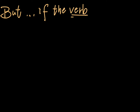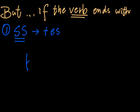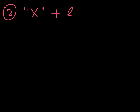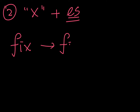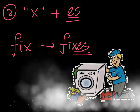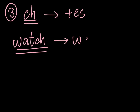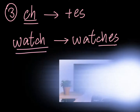For the first case, if the verb ends with SS, then we should add ES. For example, 'kiss' becomes 'kisses' — she kisses her teddy bear. For the second case, if the verb ends with X, then we should add ES. For example, 'fix' changes to 'fixes' — the mechanic fixes the machine. For the third case, if the verb ends with CH, we should also add ES, like 'watch' changes to 'watches.'